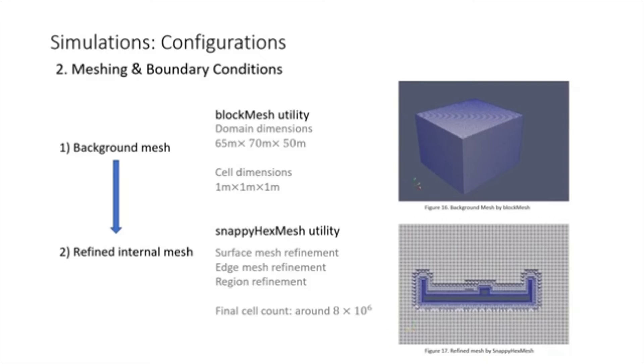The meshing step begins with defining a testing domain and generating the background mesh using the utility called block mesh in OpenFoam. The domain has a dimension of 65m by 70m by 50m, which is impossible to realize in a wind tunnel. Each cell within the domain is a cube with a width of 1m. Then the internal mesh is refined using the snappyHexMesh utility in OpenFoam. The final cell count is around 8 million. With this level of grid density, all details of the bridge, vehicles and the walls are resolved.